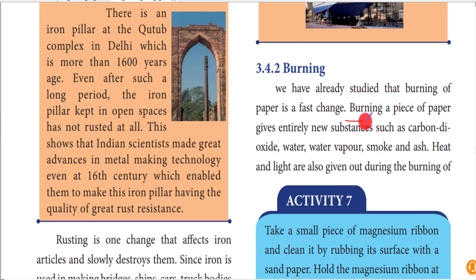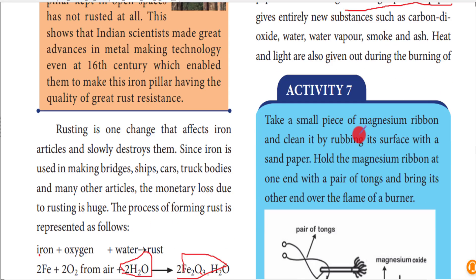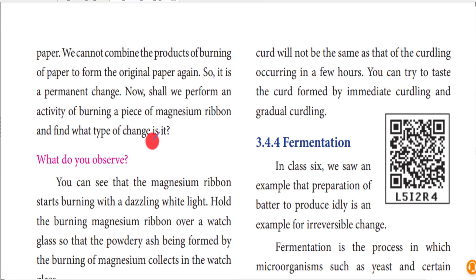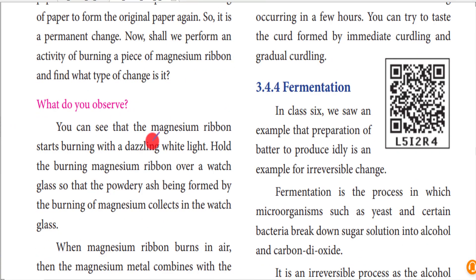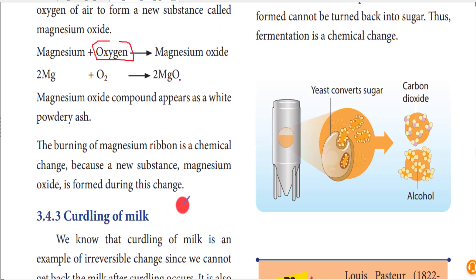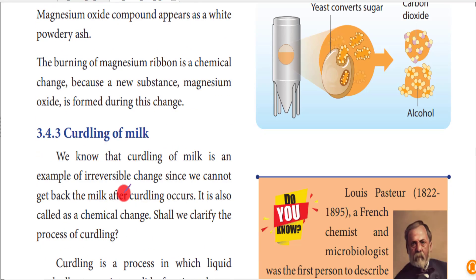Burning is the next example. When a piece of paper is burned, it produces carbon dioxide, water vapor, smoke, and ash. Another example is the magnesium ribbon - when it burns, it reacts with oxygen and produces magnesium oxide along with water. At the moment of burning, the magnesium ribbon holds heat and produces a bright light. Burning is nothing but oxidation - oxygen is involved, producing white powdery ash.